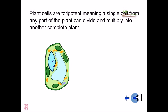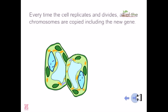Plant cells are totipotent, meaning a single cell from any part of the plant can divide and multiply into another complete plant.